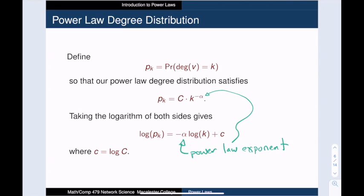So this means that if I plot log of k versus log of pk, I will get a straight line with a negative slope. And a bigger alpha corresponds to a steeper negative slope in this log-log plot.